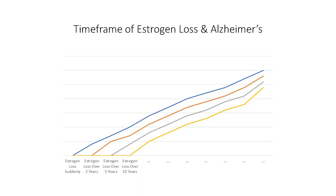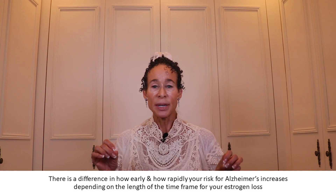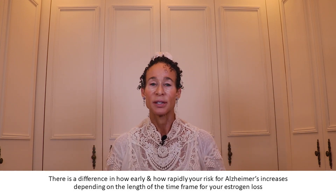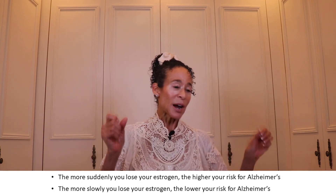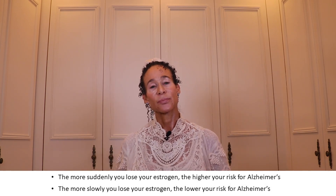Looking at the second graph with the same general pattern: the blue line shows estrogen loss suddenly, the orange line over two years, the gray line over five years, and the yellow line over ten years. There is a clear difference in how early and how rapidly your Alzheimer's risk increases depending on the length of time your estrogen loss takes. The more suddenly you lose your estrogen, the higher your risk of Alzheimer's. The more slowly you lose it, the lower your risk.